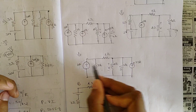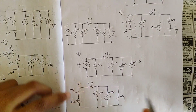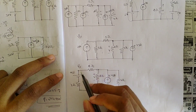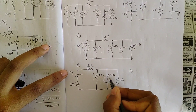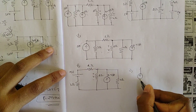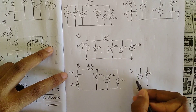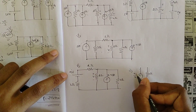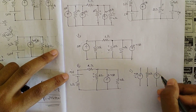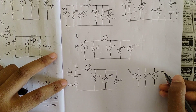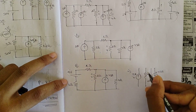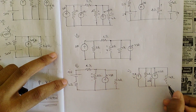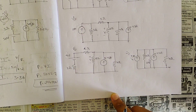Then convert to a current source in parallel with resistance so we can add the two current sources. This is 4 ohm, and I = V/R = 9/4. The 2 ohm resistance you should not touch — keep it as it is. Then we have 4 ohm. Add these two current sources and the two resistances in parallel: 4 × 4 divided by 4 + 4 = 16/8 = 2 ohm. This would now be 2 ohm resistance.